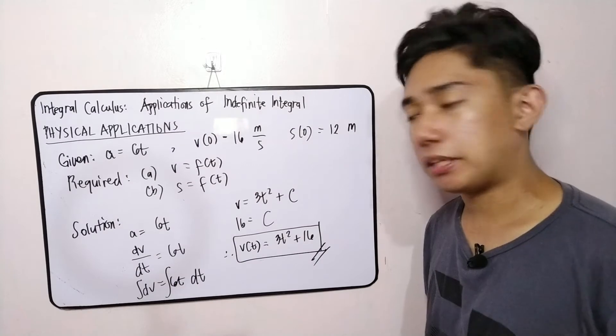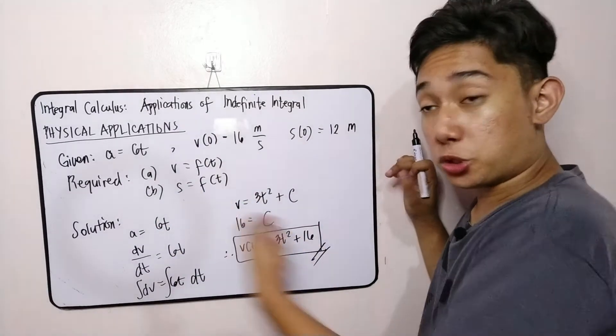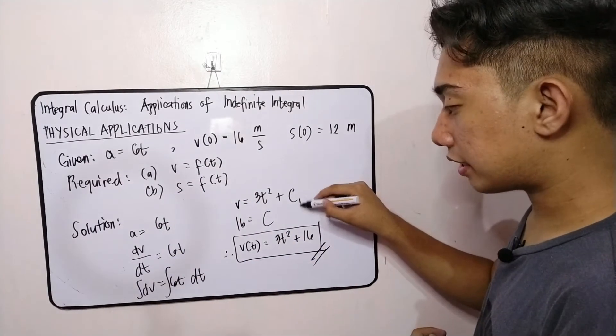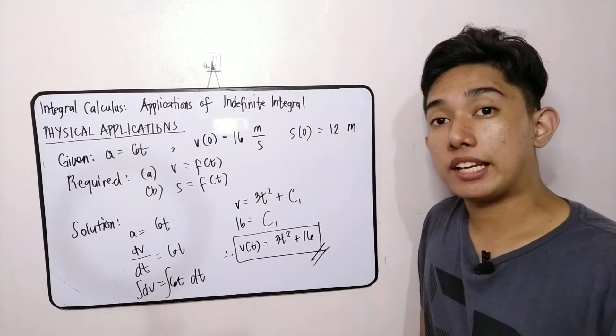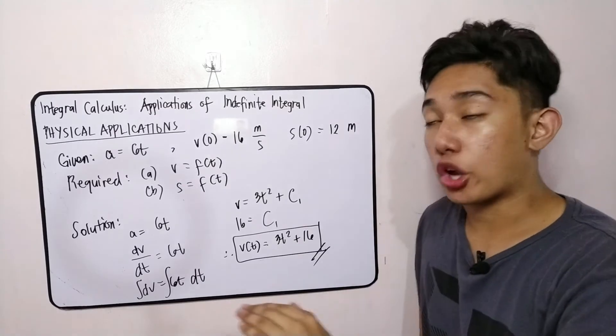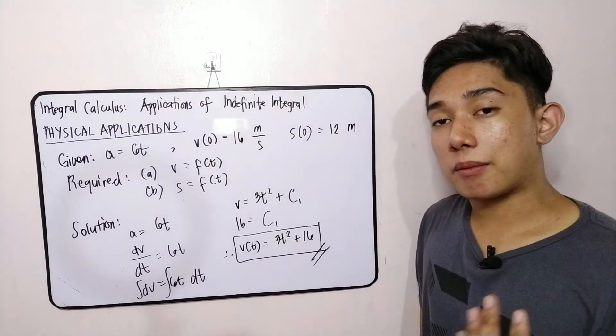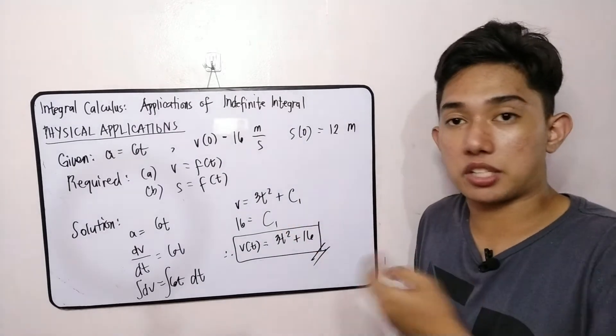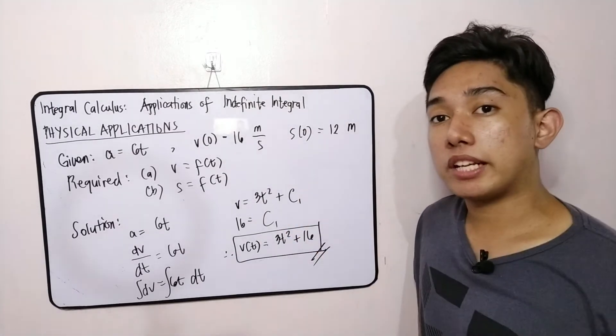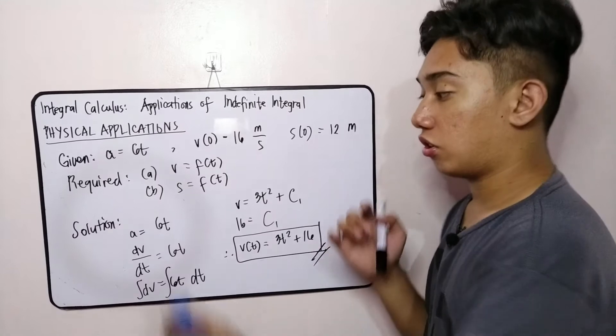How about for letter B? If we will continue our solution, let's label this constant as c sub 1. It's because ibang constant ang ating gagamitin per solution. So pag ibang constant ang gagamitin natin per solution, di pwede sila mag-equal. Nag-c tayo, c tayo sa second one, it will break the principle of the equality.